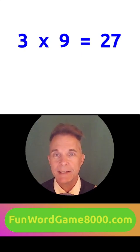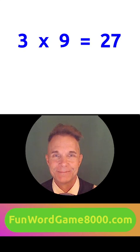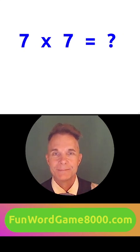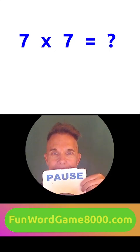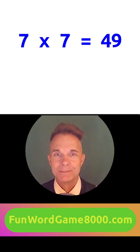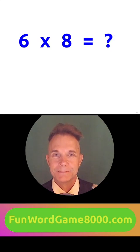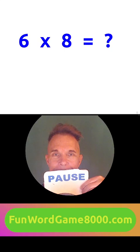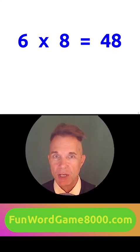Three times nine equals twenty-seven. Seven times seven equals forty-nine. Six times eight equals forty-eight.